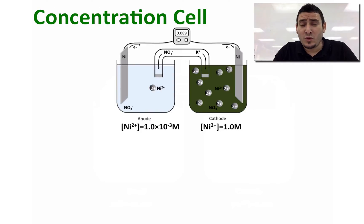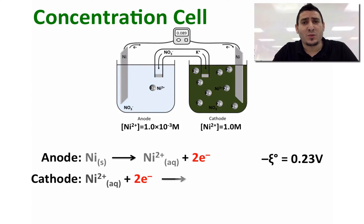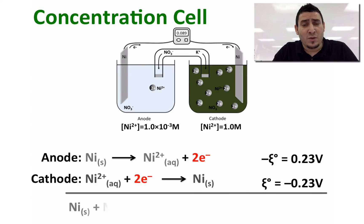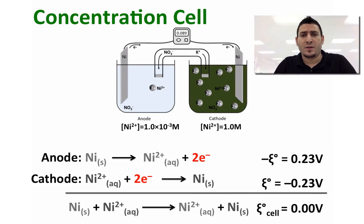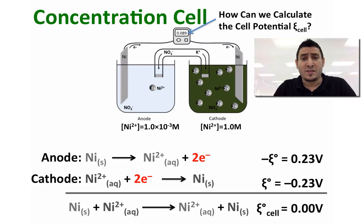If the cell had 1 molar concentrations in both compartments, the standard cell potential will be equal to zero since both compartments have the same half equation. So the question now is how can we calculate the cell potential of this concentration cell?